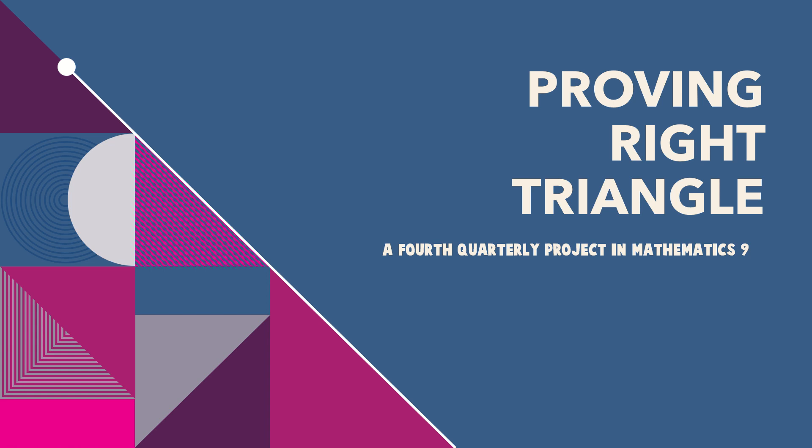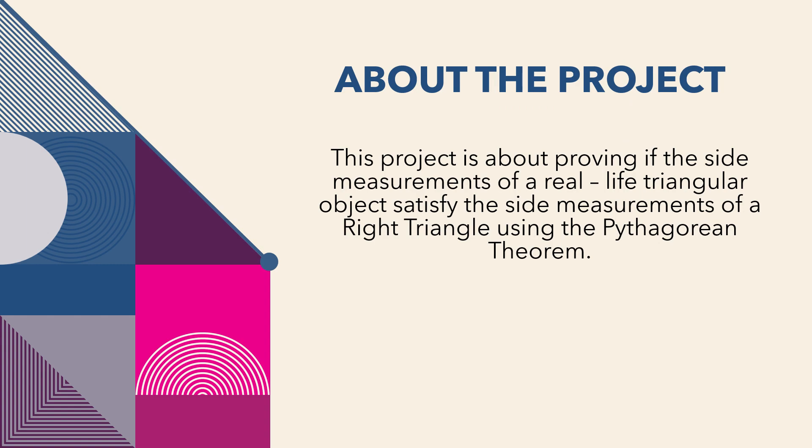Good day, Green 9 students. Your project for this quarter — the last quarter — is proving right triangles. This is the fourth quarterly project in Math 9. This project is about proving if the side measurements of a real-life triangular object satisfy the side measurements of a right triangle, using the Pythagorean theorem.